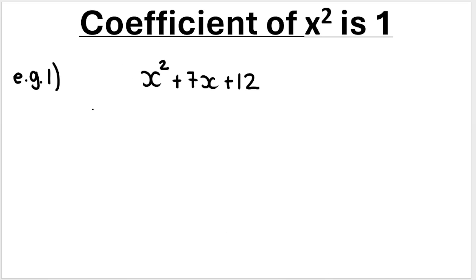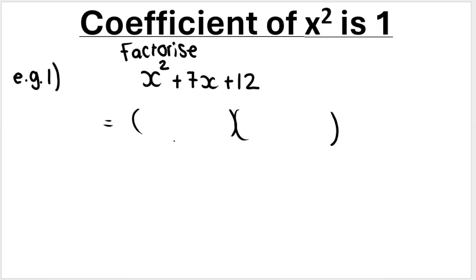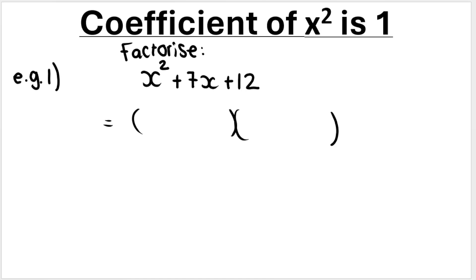Basically what I'm trying to show you is: if I ask you to factorize a trinomial, what we're going to end up with is two brackets — that is what our answer is going to be. And if I had to ask you to expand or distribute, or do the FOIL method, you will distribute and then end up back at the trinomial. So if the question says factorize, ultimately, if we're factorizing a trinomial, we're going to end up with two brackets. Now, how do we figure out what goes in those two brackets? That is where you follow this method.